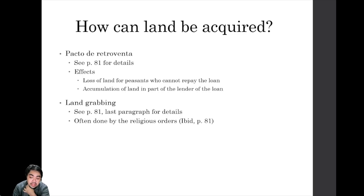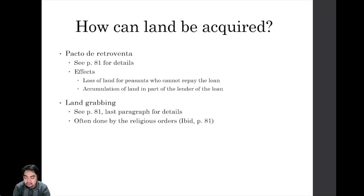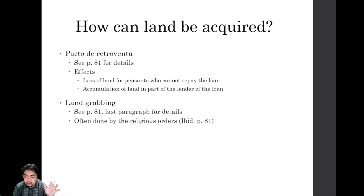Then there is also the case of land grabbing. Pacto de retrovenda, if you look at it closely, can also be considered a form of land grabbing by loan sharks. You can also read about land grabbing — there's a contentious claim here by Abinales and Amoroso that it is often done by religious orders. You can read it on page 81; the sources are attached to the module so you can explore that further for yourselves.